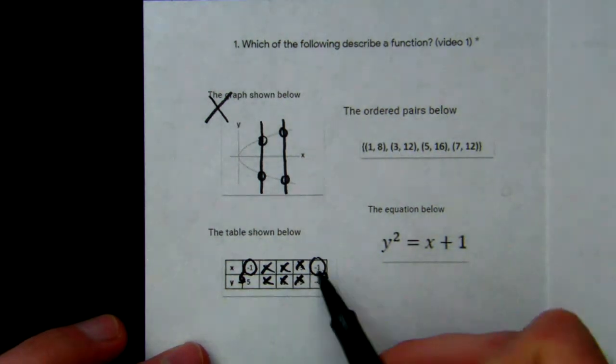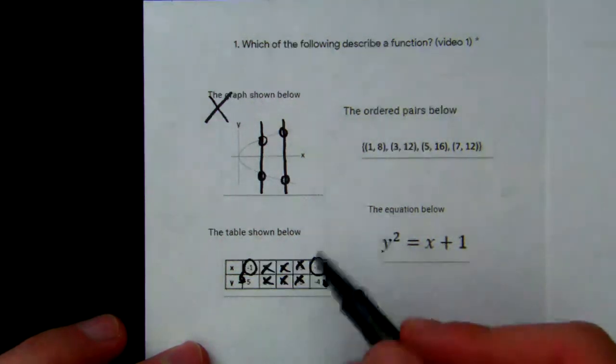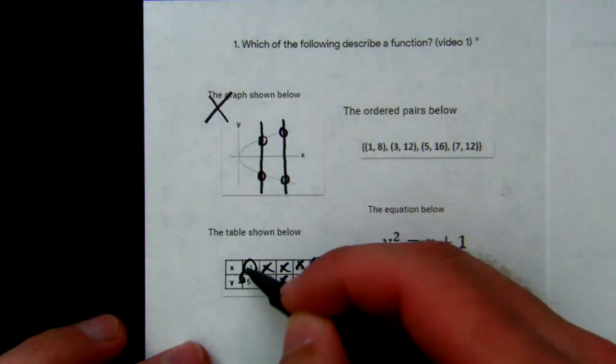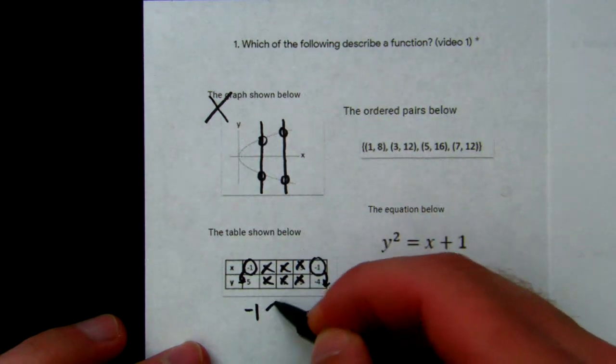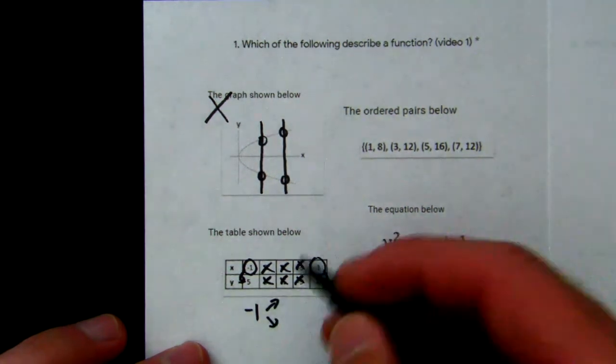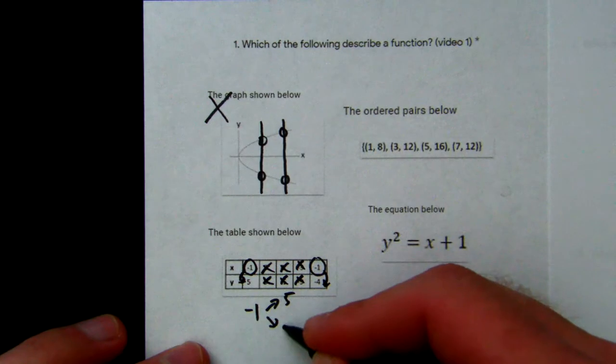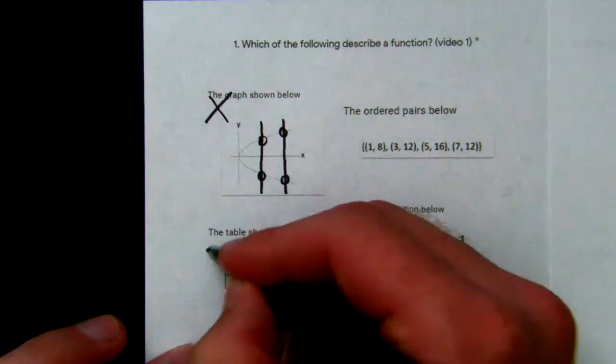So this negative 1 gives us a 5, this negative 1 gives us a negative 4. That tells me negative 1 actually gives two outputs—it gives 5 and it gives negative 4. So we know the table can't be a function.